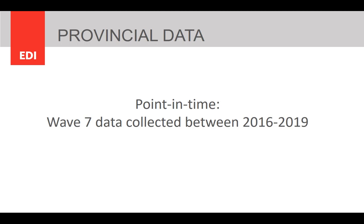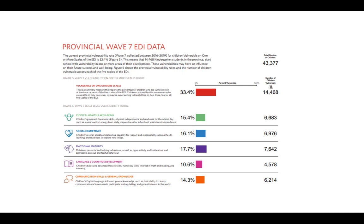In Wave 7, EDI data was collected for over 43,000 kindergarten children. The bar graphs on this page show the percentage of children in BC who are vulnerable on the scales of the EDI. On the summary measure 'vulnerable on one or more scales' — which reports the percentage of children who are vulnerable on at least one of the scales, but may be experiencing vulnerabilities in 2, 3, 4, or all 5 scales — 33.4% of children in BC are vulnerable.